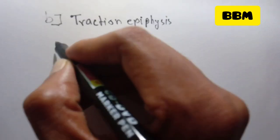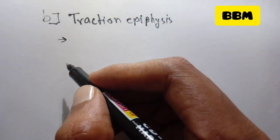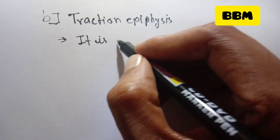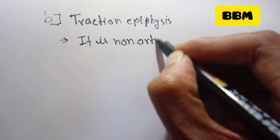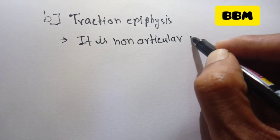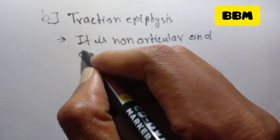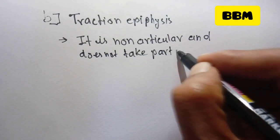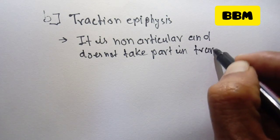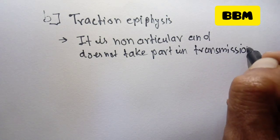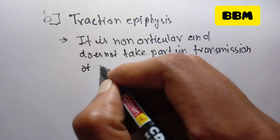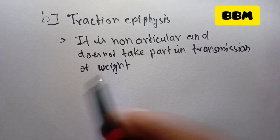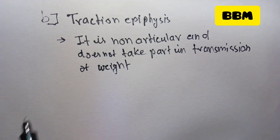The next type is Traction Epiphysis. It is non-articular and does not take part in the transmission of weight.